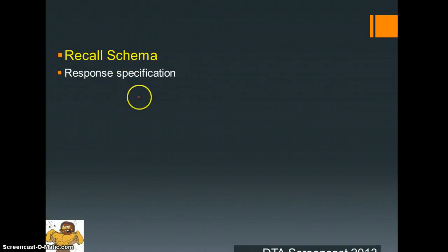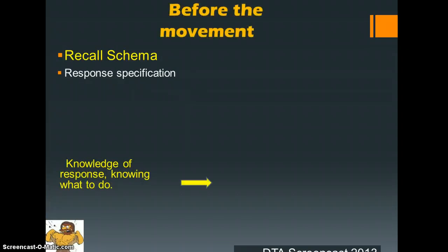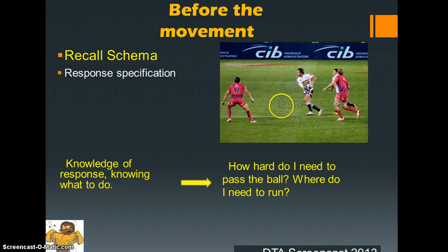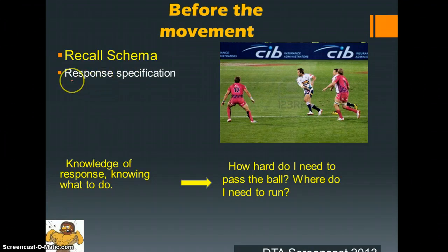The response specification — the next stage — is asking: have I got knowledge of the response? Do I know what I'm supposed to do in this chosen situation? This player has come into a situation and recognized he's been here before, but does he know what to actually do? How hard does he need to pass the ball to the player on the outside, or how hard does he need to step off his foot to run through the gap for it to be successful? These are the things that occur before the movement takes place.